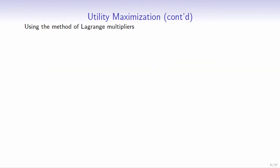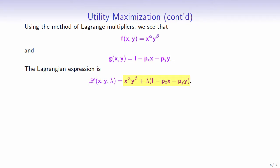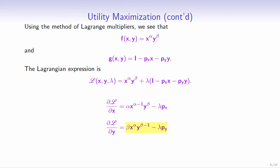Using the method of Lagrange multipliers, we set f equals x to the power of alpha times y to the power of beta, and g equals income minus the price of x times x minus the price of y times y. The Lagrangian expression is x^alpha times y^beta plus lambda times (income minus px times x minus py times y). The partial derivatives of L with respect to x, y, and lambda are computed accordingly.